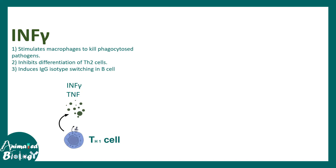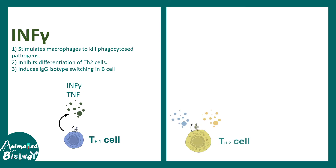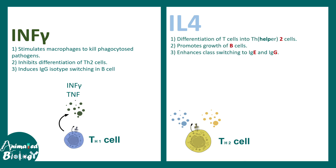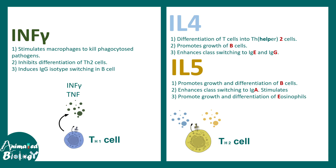Three important cytokines to highlight: interferon gamma stimulates macrophages to kill pathogens, inhibits TH2 differentiation, and induces IgG subtype class switching in naive B cells. IL-4, secreted by TH2 cells, helps in TH2 differentiation, promotes B cell growth, and enhances class switching to IgE. IL-5 promotes growth and differentiation of B cells and eosinophils.